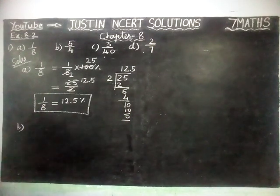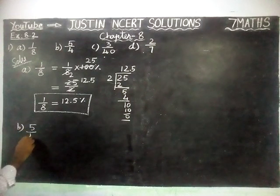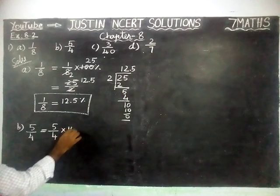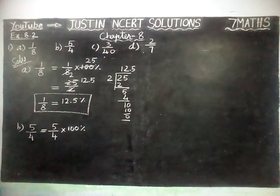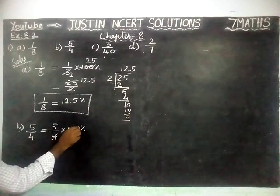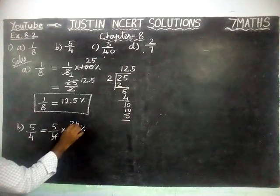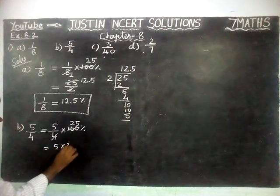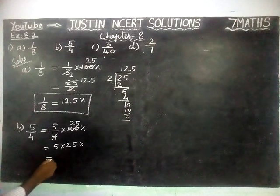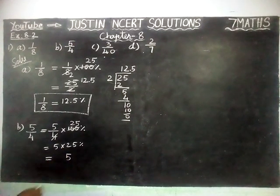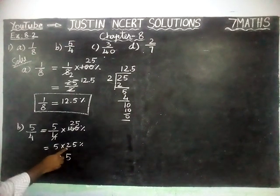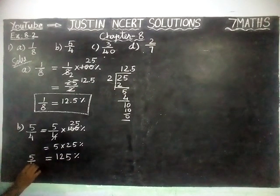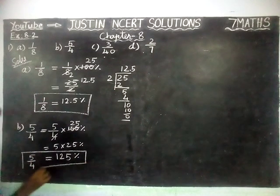Part B: 5 by 4 is equal to 5 by 4 into 100 percent. We are going to simplify. 1 four is 4, and 25 fours are 100. Now, 5 into 25 percent: 5 fives are 25 remaining 2, 5 twos are 10, 10 plus 2 is 12. So, 5 by 4 is equal to 125 percent.